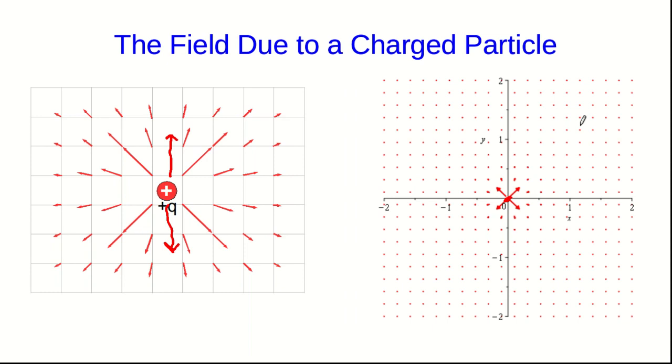And notice how only the vectors very close to where the charge is at the middle are visible. Everywhere else they've just become dots. And that's because they fall off in size as 1 over r squared. And that's a very fast fall off. And so out here they all just look like dots. This diagram is more correct, but this one is more useful conceptually.